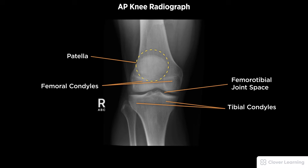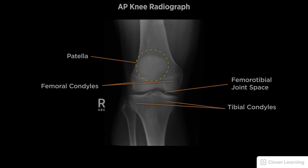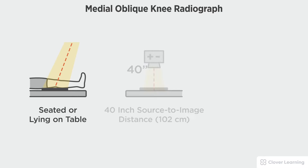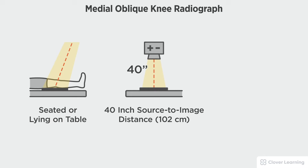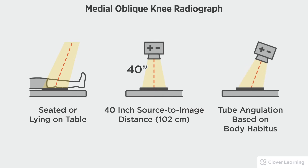In this view we will be demonstrating the medial oblique rotation knee. The medial rotation oblique knee radiograph should be performed with the patient seated or lying on the radiographic table, with the image receptor placed tabletop or in the bucky, a 40 inch source to image distance, and caudal or cephalic tube angulation based on the patient's body habitus.